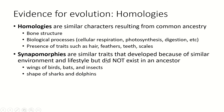For example, birds, bats, and insects all have wings and use them to fly. They all developed wings as a means of flying, not because some common ancestor of birds, bats, and insects had wings — in fact, their ancestors did not have wings. We also see this in sharks and dolphins, which are both fast-swimming ocean-dwelling animals with a torpedo shape that enables them to move very fast through the water.